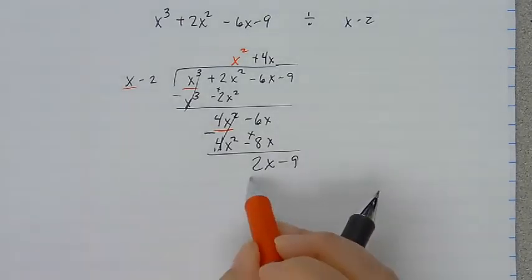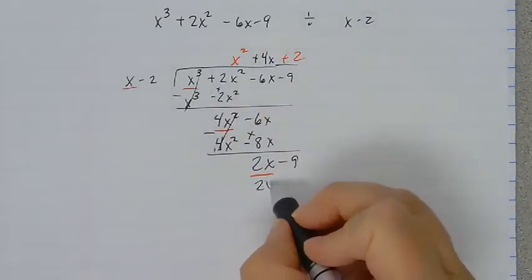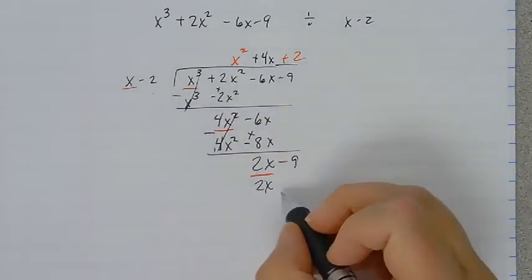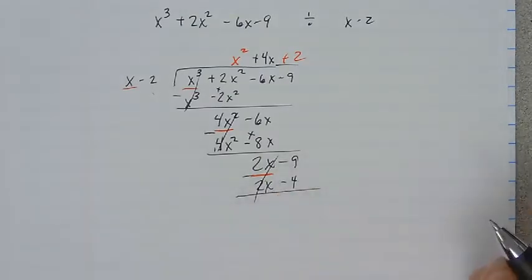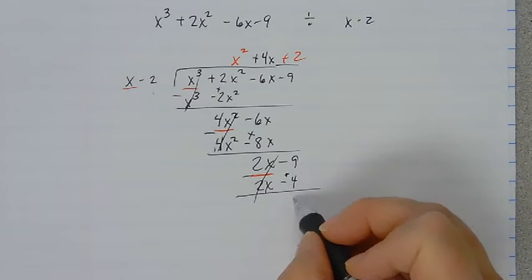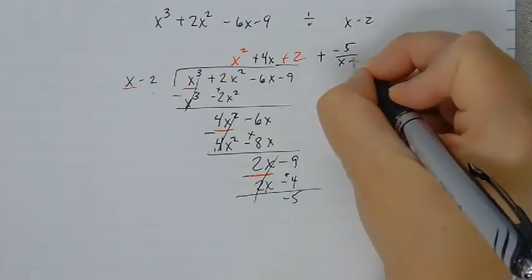What do you take times x to get 2x? You need a 2 right here. 2 times x is 2x. 2 times negative 2 is negative 4. I subtract to get these to cancel. So this becomes a plus negative 5. So I have a remainder of negative 5 out of x plus 2.